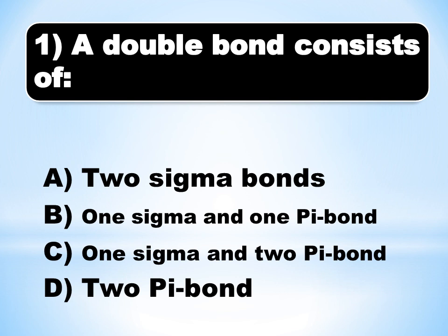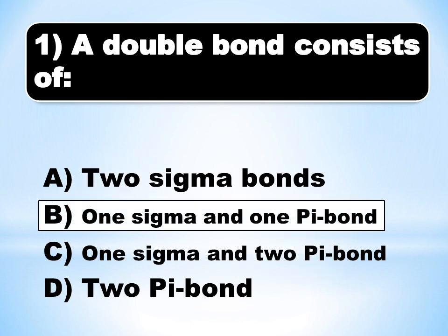A double bond consists of a simple concept. When a double bond consists of a single bond, the remaining bonds are pi. So what will happen in a double bond? The suitable answer is B: one sigma and one pi bond.